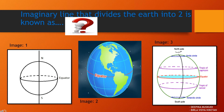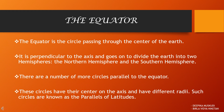An imaginary line running on the globe that divides it into two equal parts is known as the equator. The northern half of the earth is known as the northern hemisphere and the southern half is known as the southern hemisphere. The equator is an imaginary circular line and is a very important reference point to locate places on the earth. It is perpendicular to the axis and divides the earth into two hemispheres.